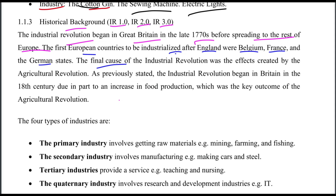A key cause of the Industrial Revolution was the effect created by the Agricultural Revolution. The Industrial Revolution began in Britain in the 18th century, partly due to an increase in food production, which was a key outcome of the Agricultural Revolution.